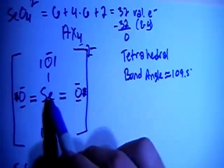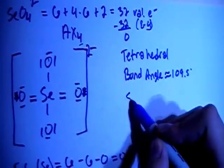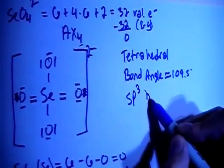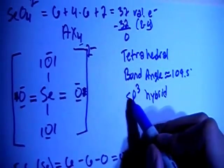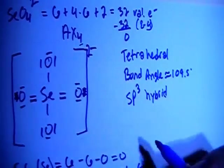In terms of hybridization, one central atom surrounded by four bonding sites, four electron groups, that means SP3 hybrid. Because you have one S and three P, so that's four orbitals for four different electron groups.